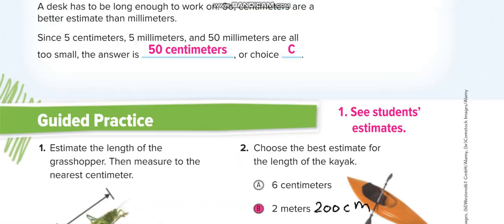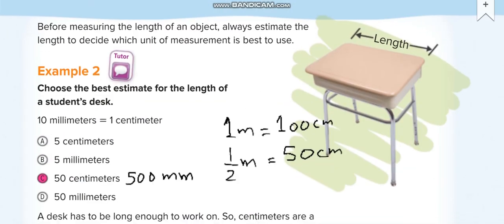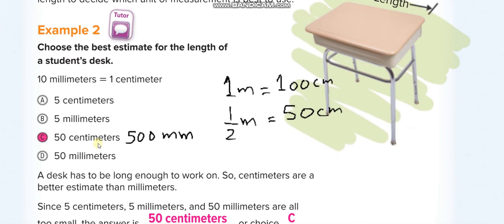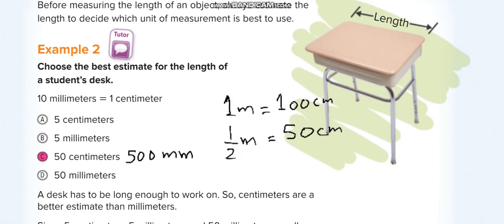For this object, the best estimate is 50 centimeters. Its height could be one meter, but its length is about 50 centimeters. To convert to millimeters, multiply 50 by 10 to get 500 millimeters. Since one meter equals 100 centimeters, 50 centimeters is half of 100 — so it's about half a meter.